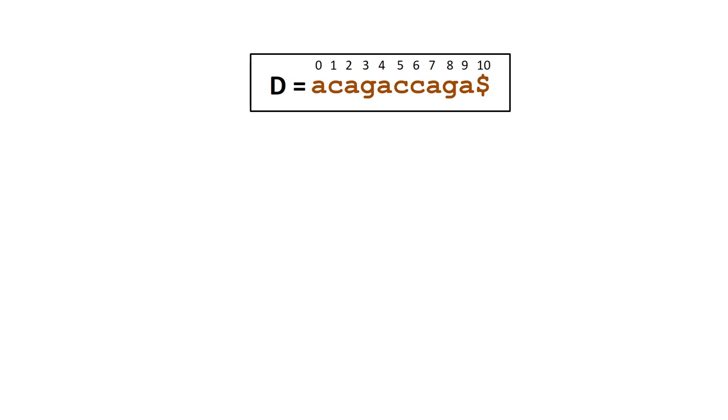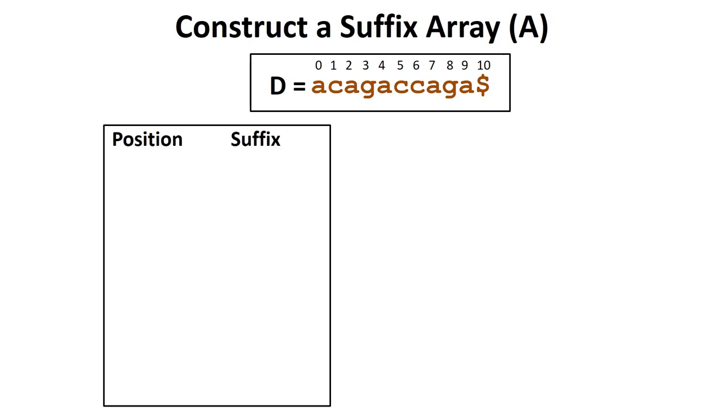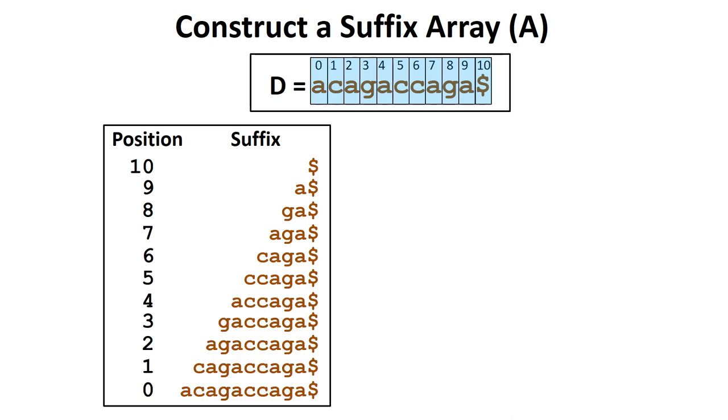To help us construct a suffix tree, we will first create a suffix array. Each element in the suffix array corresponds to a position in the DNA sequence and its corresponding suffix. For example, at position 10, the suffix is the dollar sign. At position 9, the suffix is an a followed by the dollar sign. The suffix ga dollar sign is at position 8. The suffix AGA dollar sign is at position 7, and so on. We can continue to build this list backwards until we reach position 0, where the suffix is the entire DNA sequence in the database.